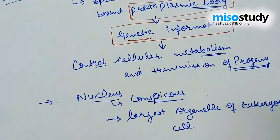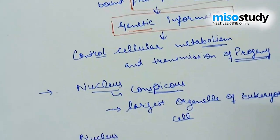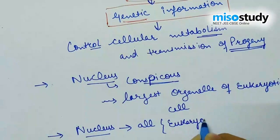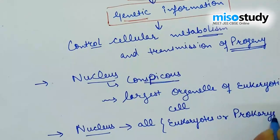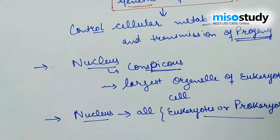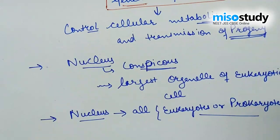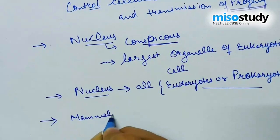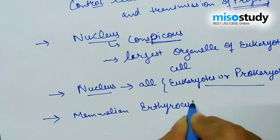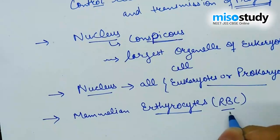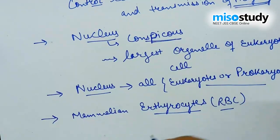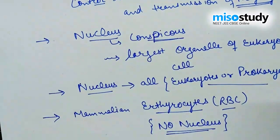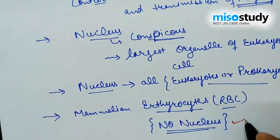When we discuss about the nucleus — whether it is present in eukaryote or prokaryote cells — nucleus is found in all cells of either eukaryotes or prokaryotes. When we discuss about the higher mature cells, in mammalian erythrocytes — erythrocytes is the term used for RBC, leukocyte for WBC, and thrombocytes for platelets — the erythrocytes contain no nucleus. So for NEET, you should know in which organelle it is present and in which cells it is absent.